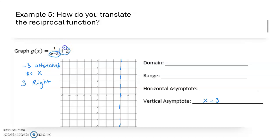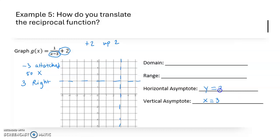There is also a plus 2 added onto the end of the function, so it's going to move the function up 2. It's a vertical translation — not attached to x — so that moves the horizontal asymptote from 0 to y equals 2. Then I plot the two special points where the reciprocal is itself, and sketch that hyperbola shape shooting towards those asymptotes.